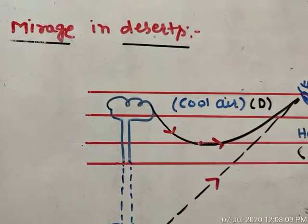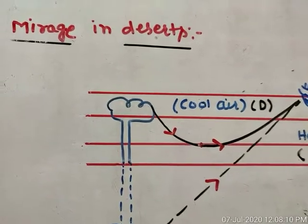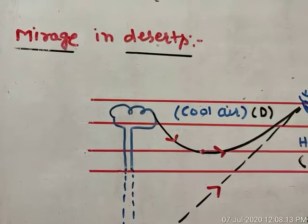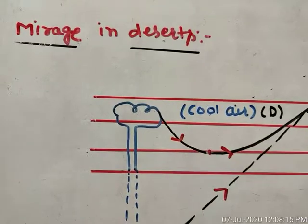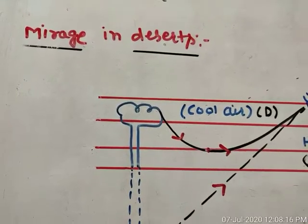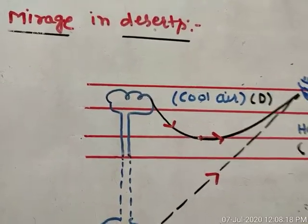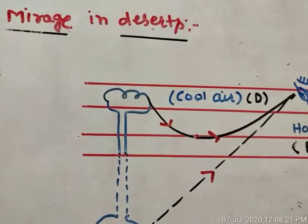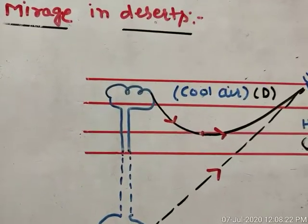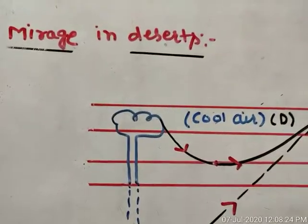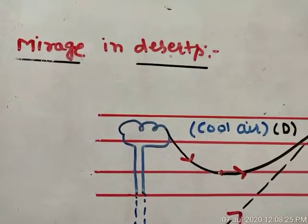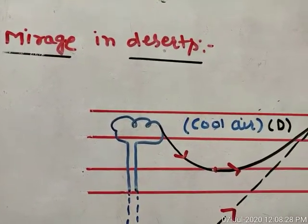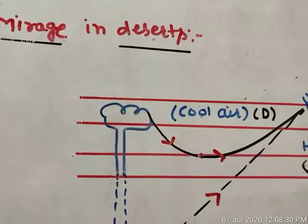Now let's discuss some simple applications based on the total internal reflection phenomenon. The first optical illusion is 'mirage in desert' — in a desert, from a distance, we get an illusion of water somewhere far away. That water is not actually there, but from a distance it appears as if there could be water.